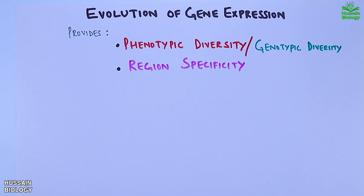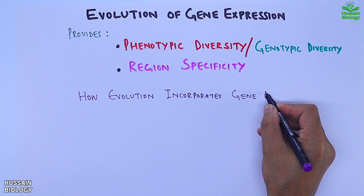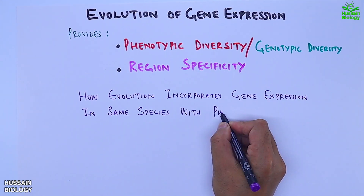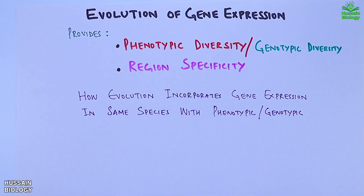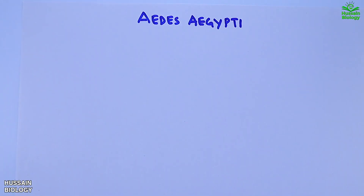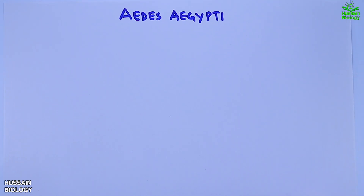Here we will mostly be focusing on how evolution incorporates gene expression in the same species with phenotypic or genotypic diversity, and for this concept we will be taking Aedes aegypti as an example to see how gene expression has evolved.